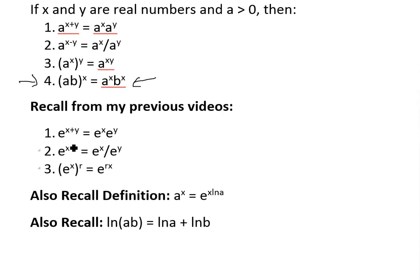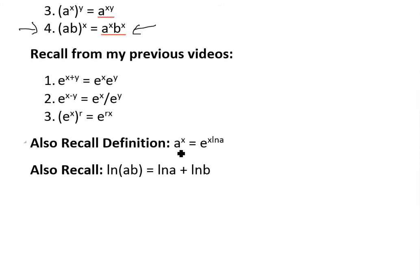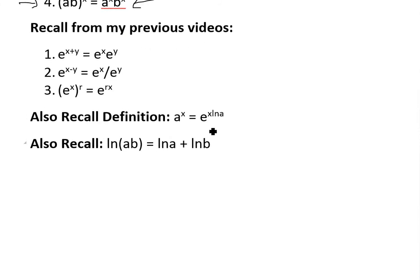So I also want to recall the definition. In my earlier video on general exponential functions, I proved that a to the power of x equals e to the power of x ln a. Make sure to watch that video to understand why I define it like this. And also recall this logarithmic function: ln of ab equals ln a plus ln b. You can see the proof in the video link below.